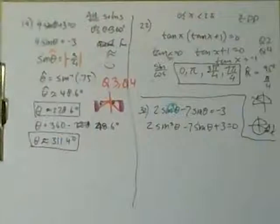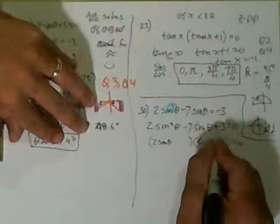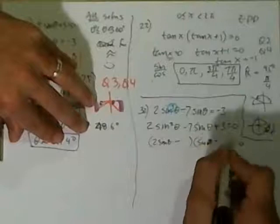Step 1, Step 2: 2 sinθ, sinθ. Step 3, the plus tells you they're both same signs, this minus tells you they're both minus. The factors of 3 are 3 and 1.